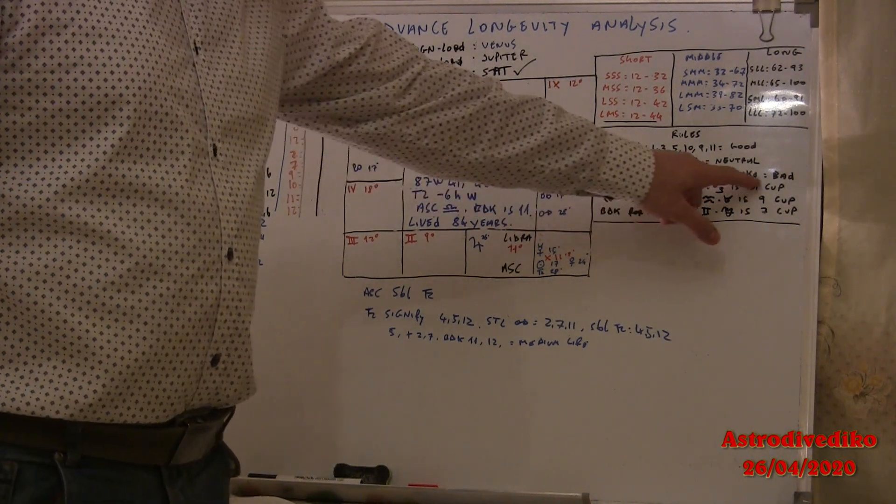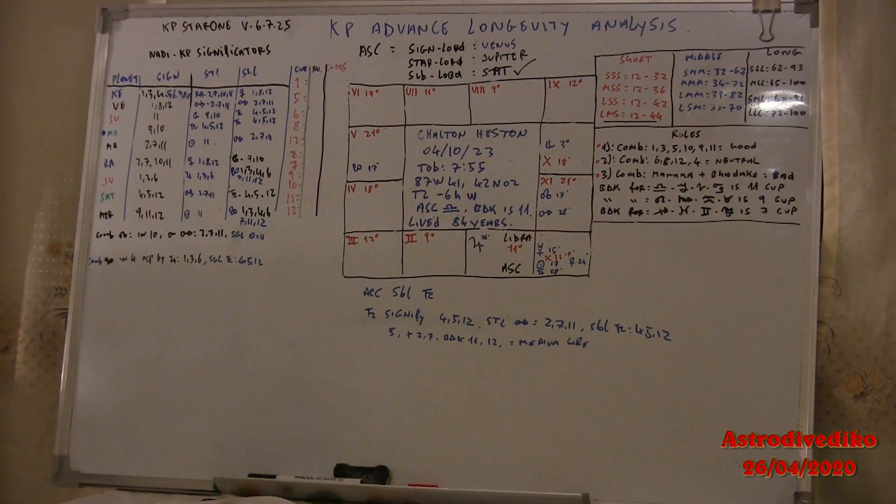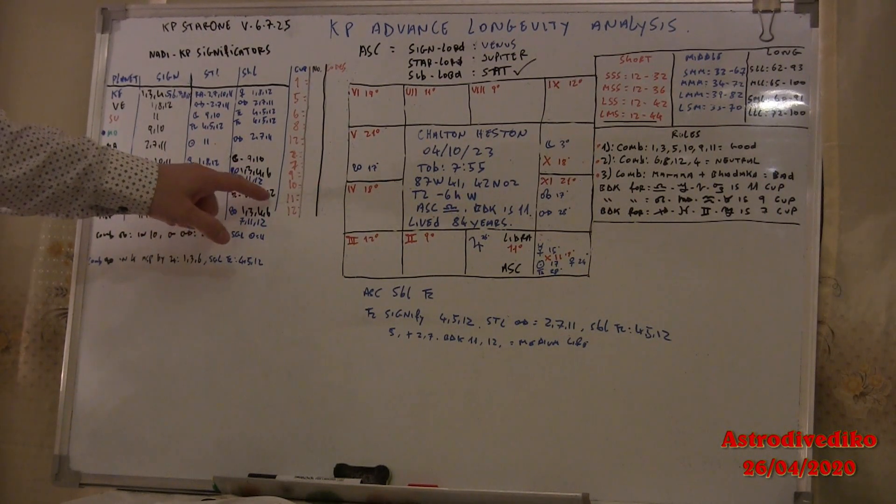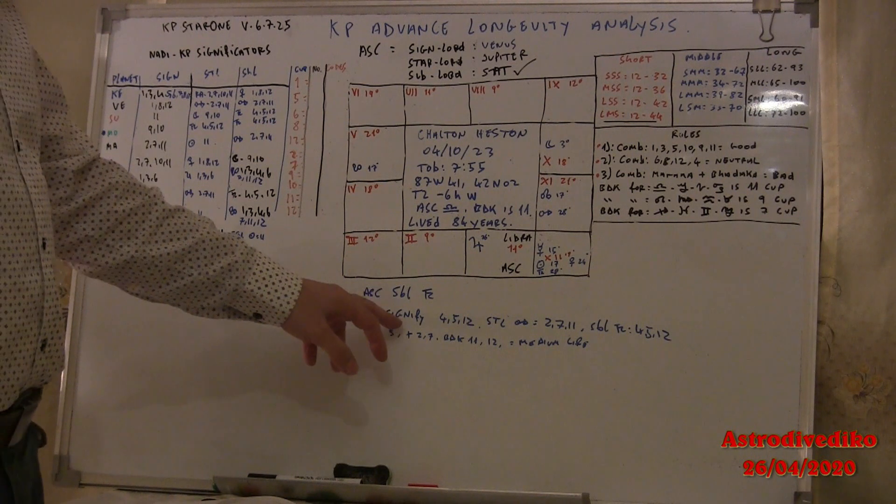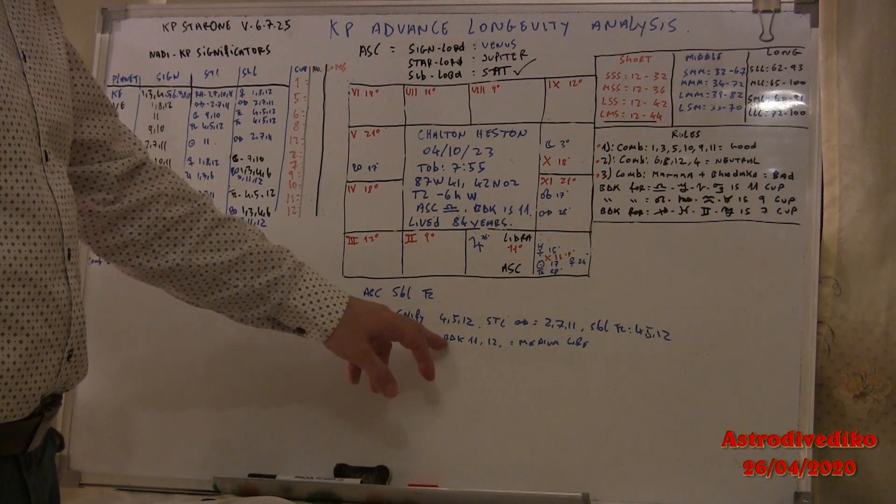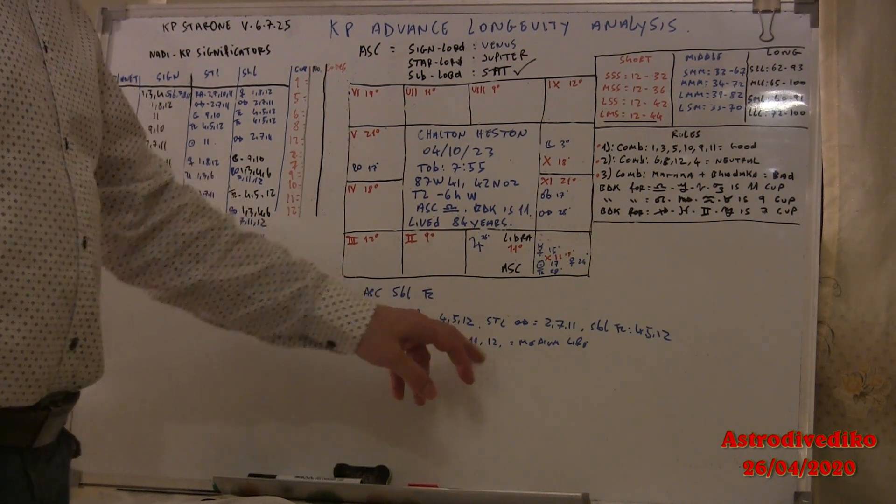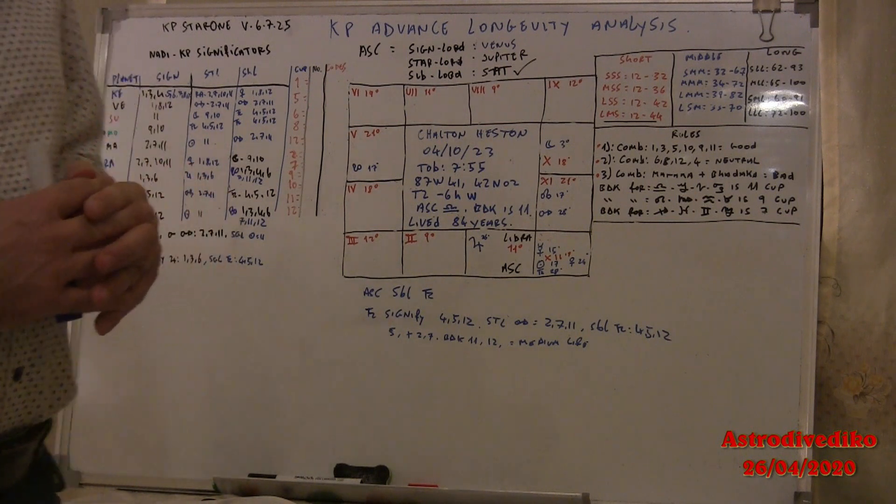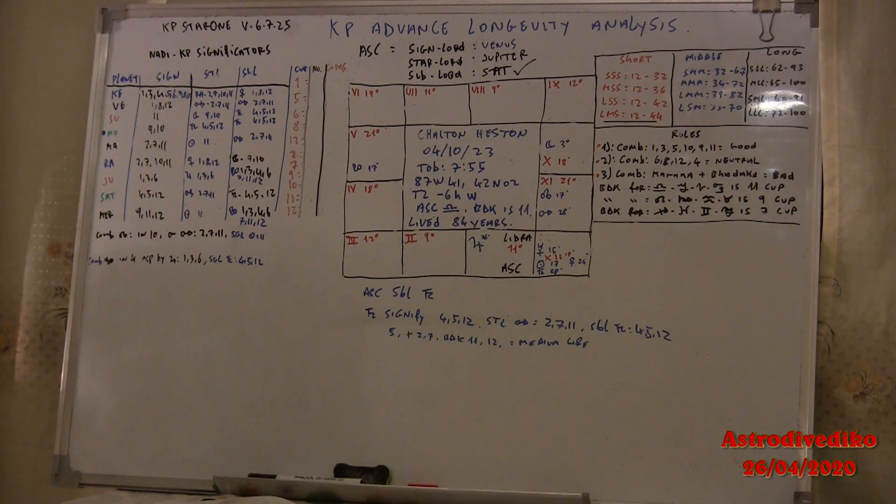Saturn in own sub 4, 5, 12. So Saturn symbol signifies 5, a good house, 2, 7 Maraca bad, and Badaga 11 and 12 end of life. In a normal traditional way it shows a median life from 33 up to 65, so it did not work because Charlton Heston lived up to 84 years.